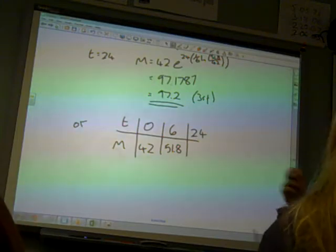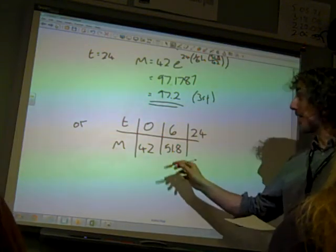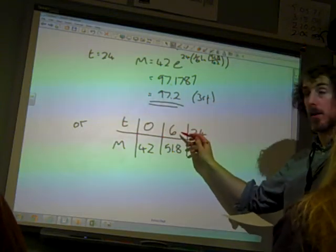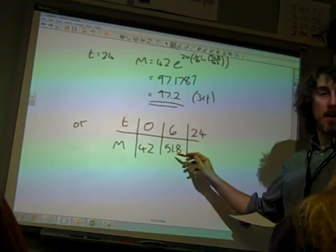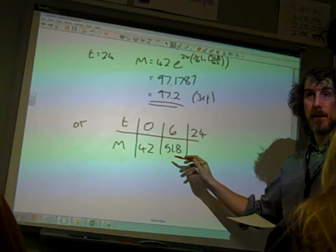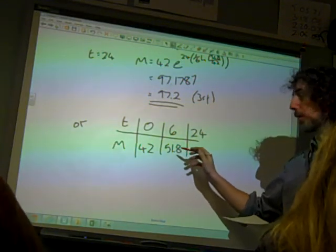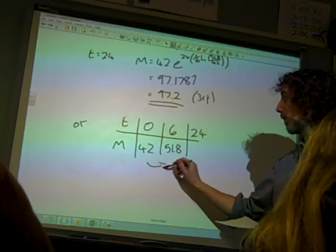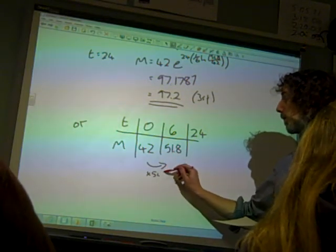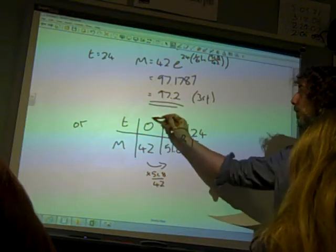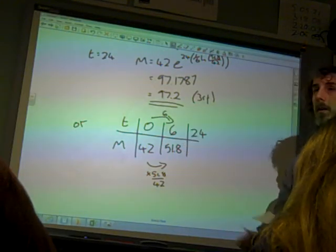So what we're thinking here is every time time goes up by 6, the mass is multiplied by our ratio there. So the mass is multiplied by 51.8 over 42. Okay.